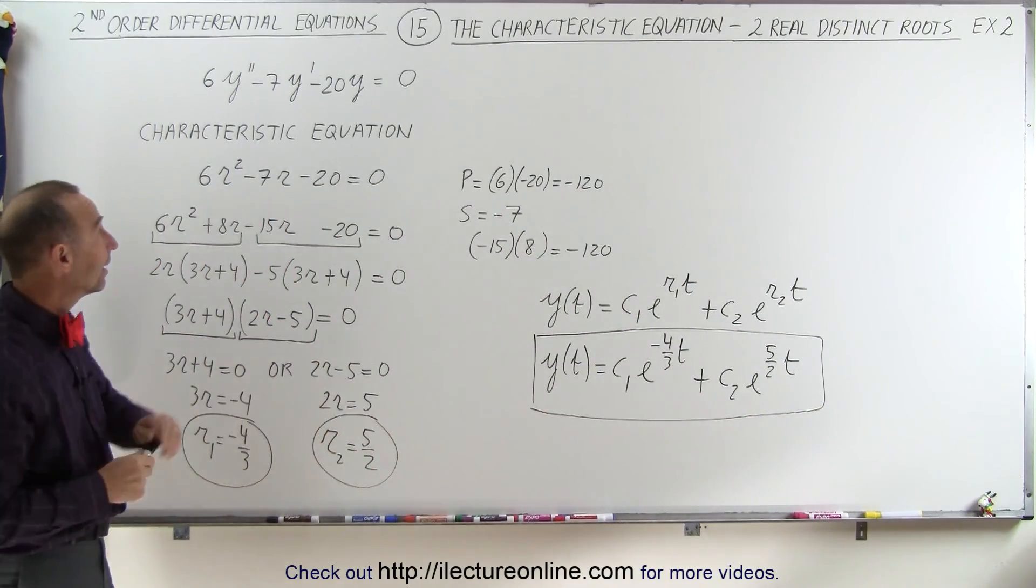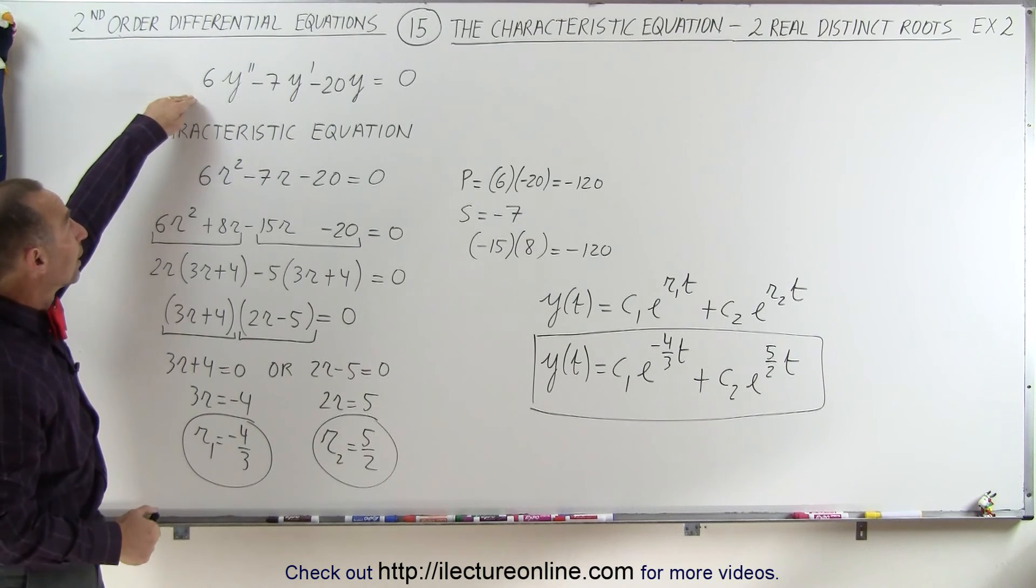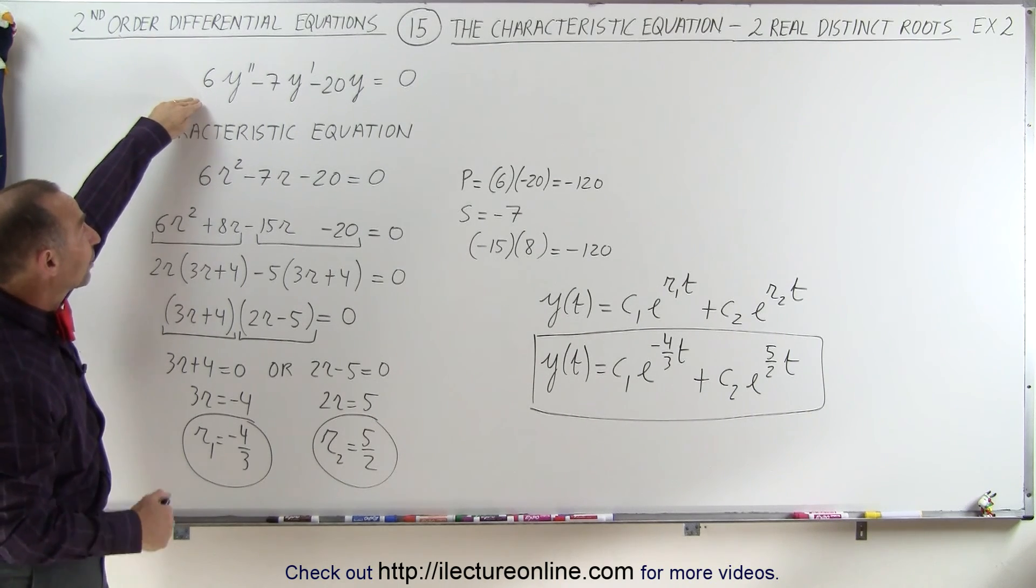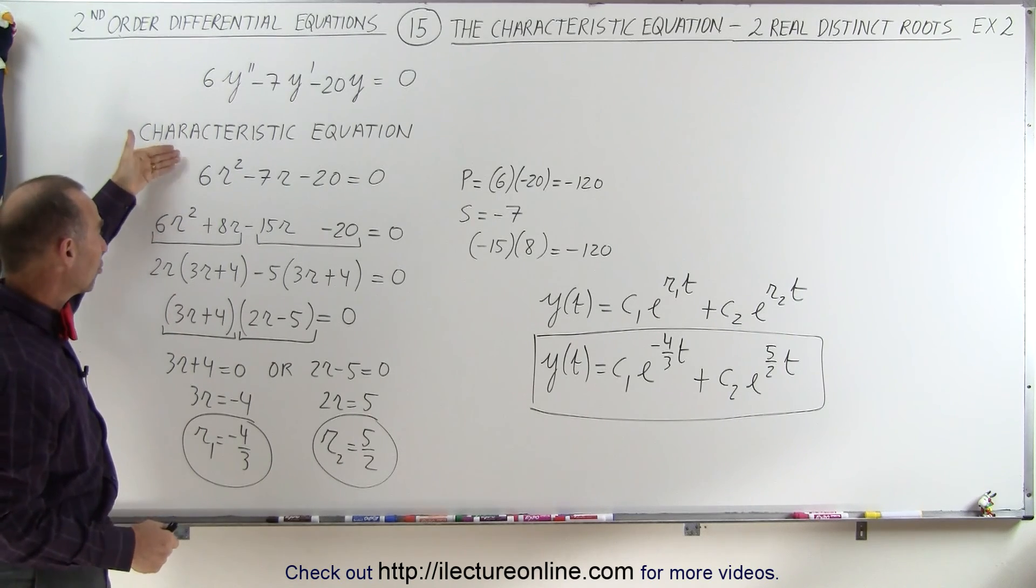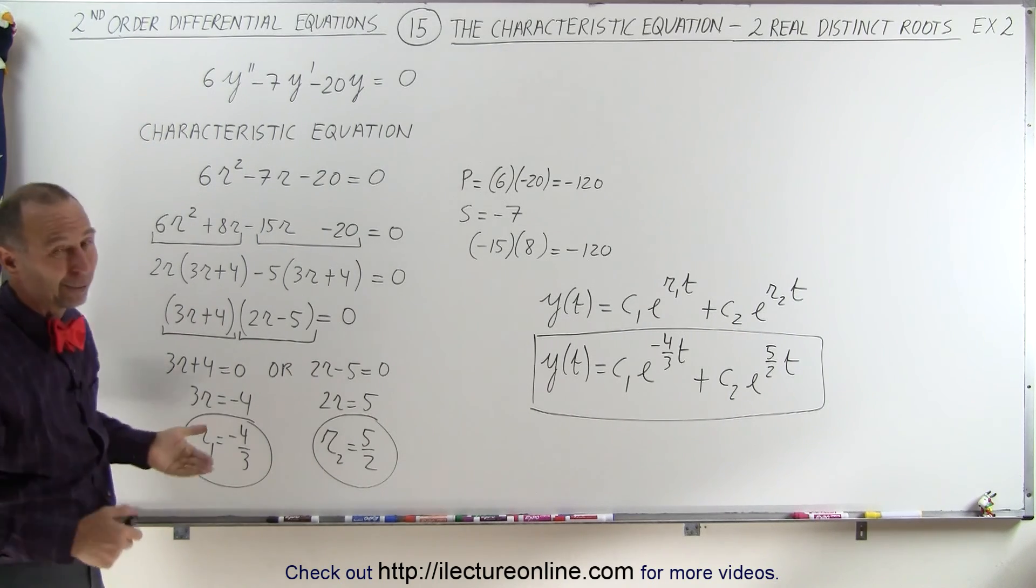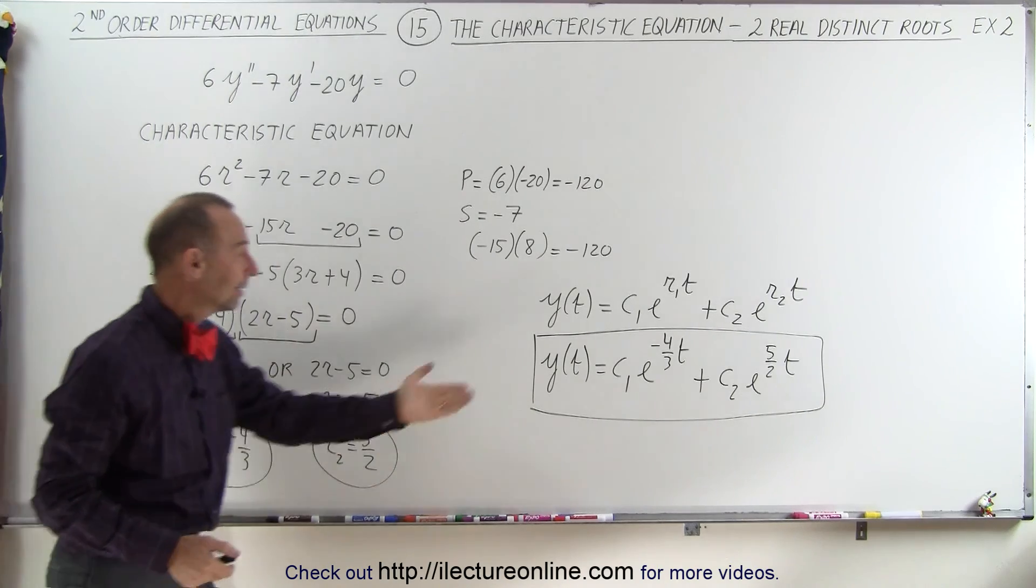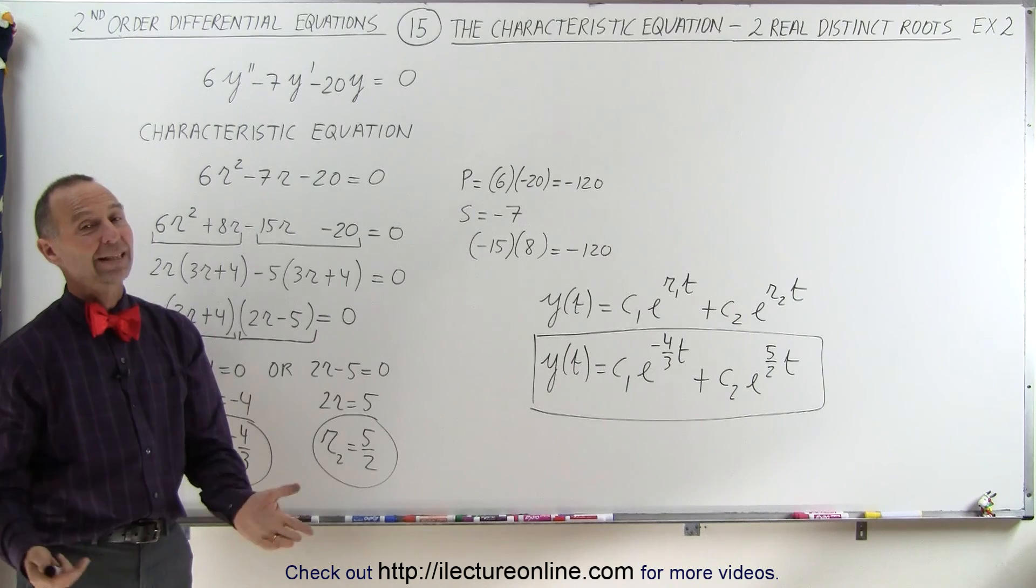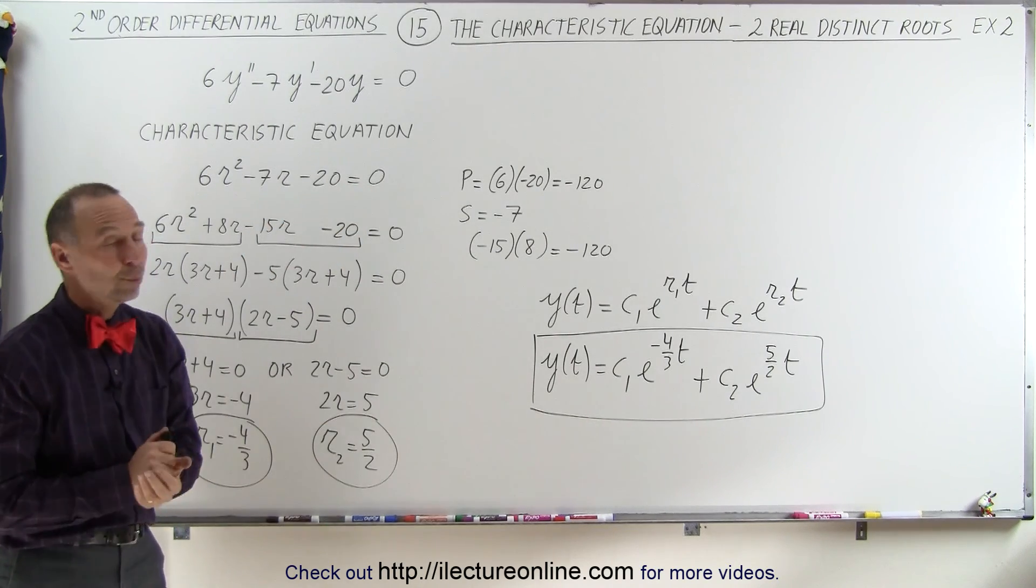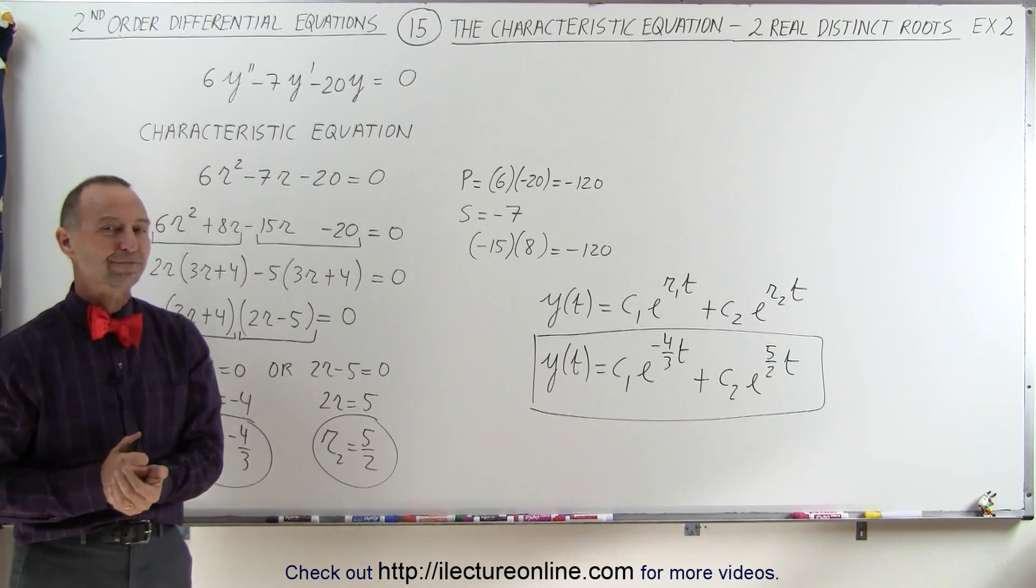So when you have a second-order linear homogeneous differential equation with constant coefficients, all we have to do is find the characteristic equation, solve it algebraically, and then plug those roots into our general solution. That's how it's done when we have two real distinct roots.